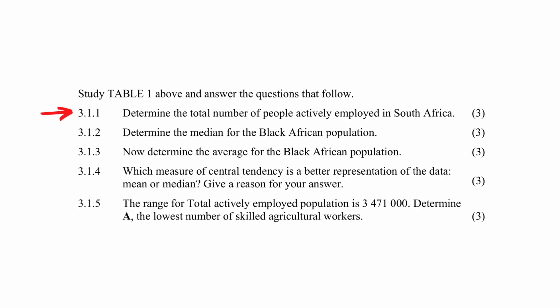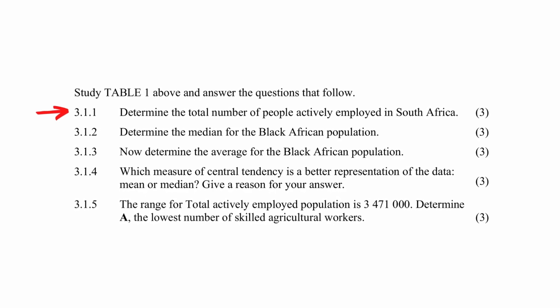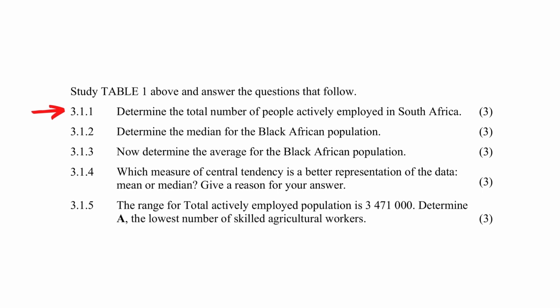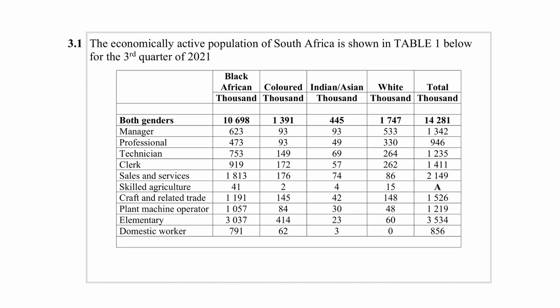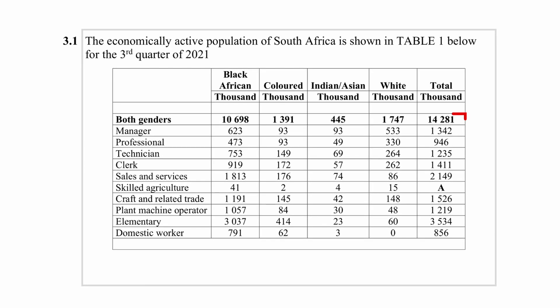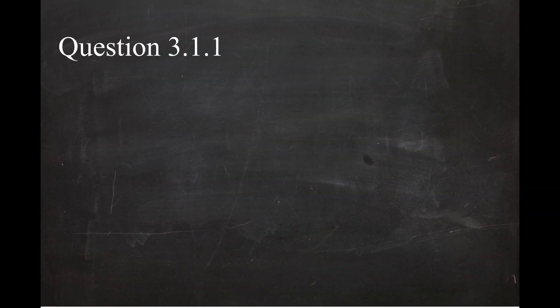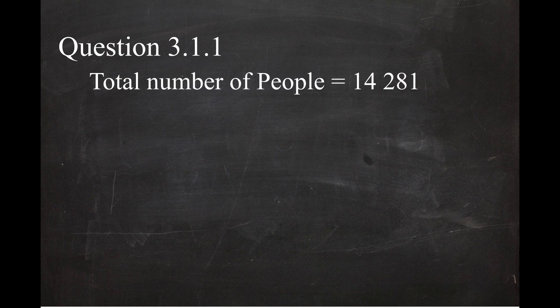Question 3.1.1 instructs you to calculate the total number of people actively employed in South Africa. The total number of people actively employed can be read off the table. Since the value is in thousands, you will have to multiply it by 1,000 to get the true value. So the total number of people is 14,281 multiplied by 1,000, which equals 14,281,000.